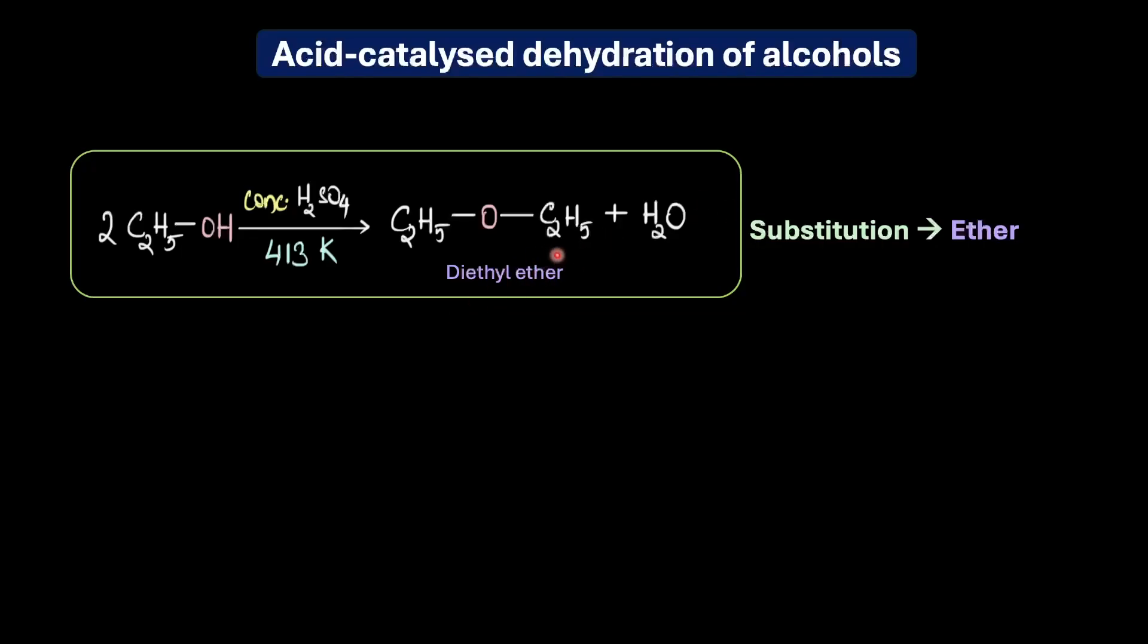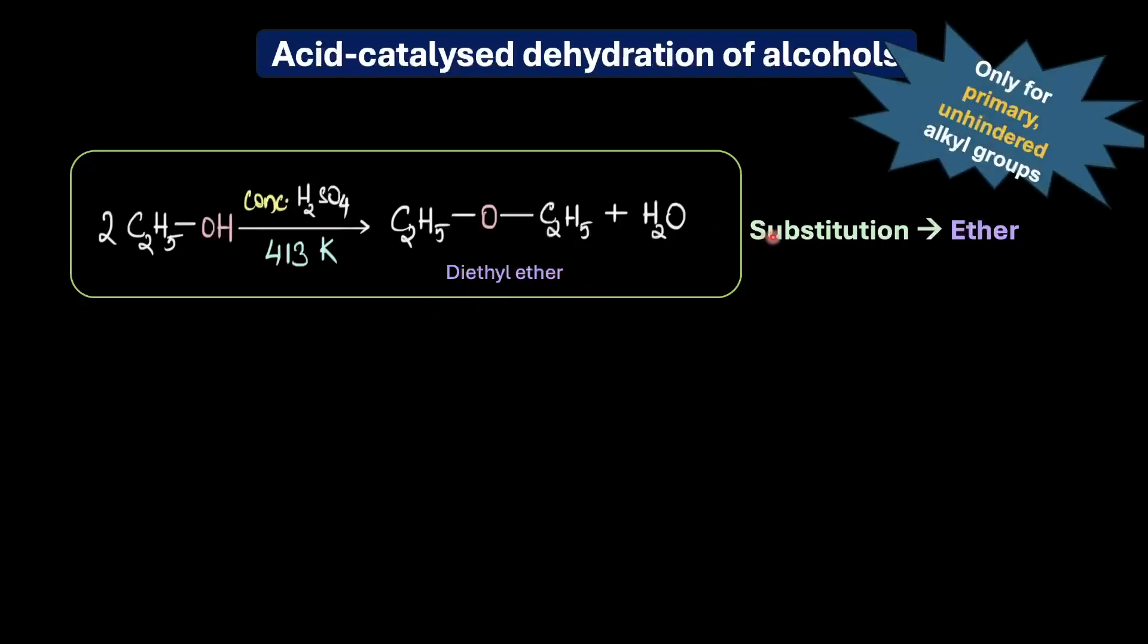So till now we discussed the mechanism, the possible competing reactions, and the conditions under which we can favor the formation of ether, right? But you know what, it does come with a lot of limitations. You see this bimolecular SN2 dehydration is effective only for primary unhindered alkyl groups, because as we all know SN2 mechanism requires an unhindered substrate like a primary alcohol.